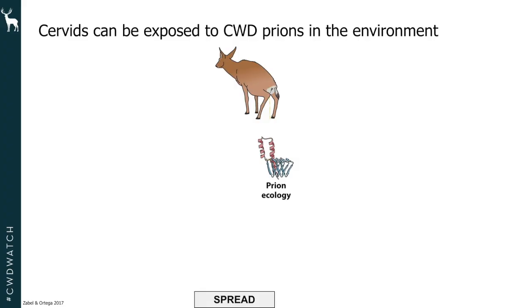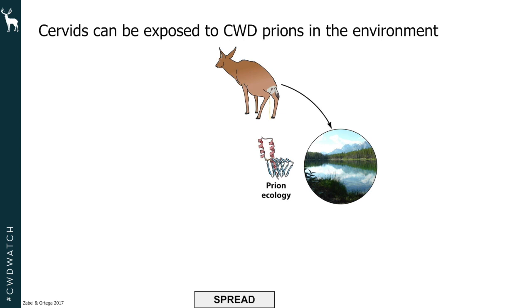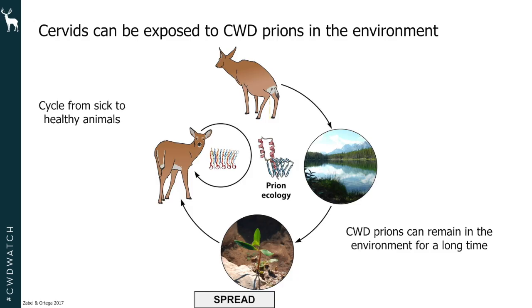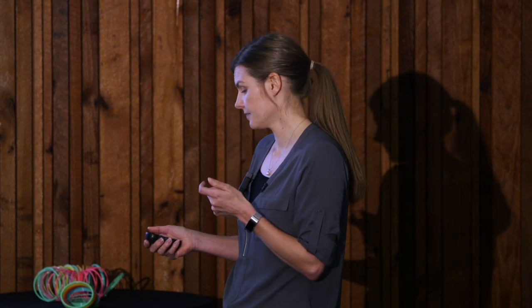Looking at environmental spread in a cyclical fashion: a CWD-positive deer urinates near a water source, vegetation, or soil, so CWD prions from that infected individual are now in the environment and could be there for quite a long time. A healthy deer comes into that same environment, ingests some of those CWD prions, and that misfolded prion gets inside the healthy deer. The abnormal prion contacts normal prions and makes them misfold — a domino effect — and the cycle begins again.